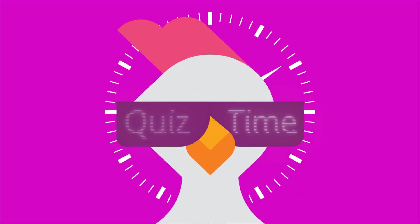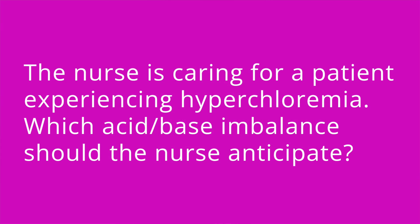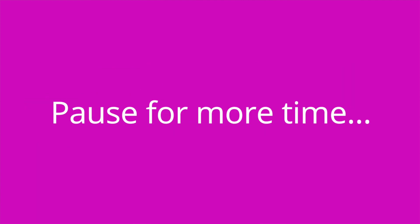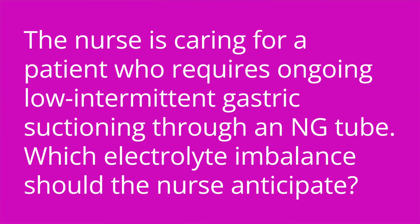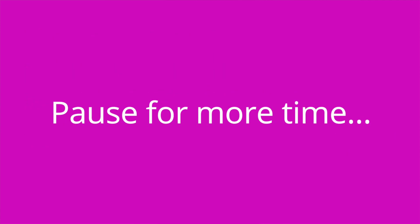All right, I'm so glad you stayed until the end, because I'm going to test your knowledge of some key facts I provided in this video using our quiz questions. The nurse is caring for a patient experiencing hyperchloremia — which acid-base imbalance should the nurse anticipate? Metabolic acidosis. The nurse is caring for a patient who requires ongoing low intermittent gastric suctioning through an NG tube — which electrolyte imbalance should the nurse anticipate? Hypochloremia.